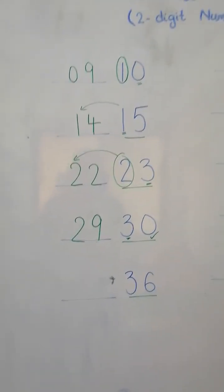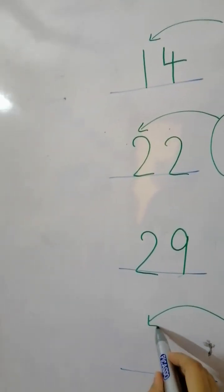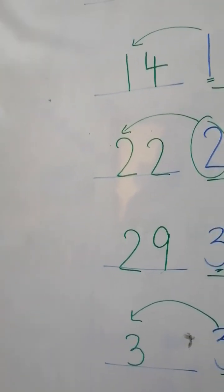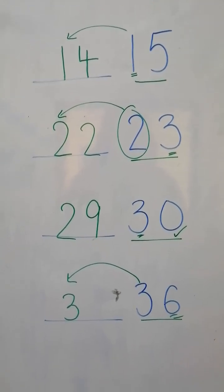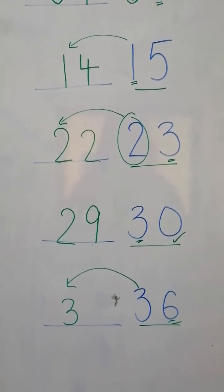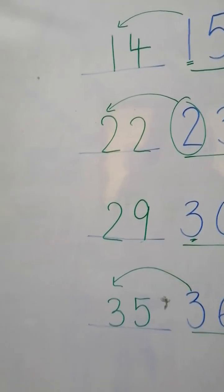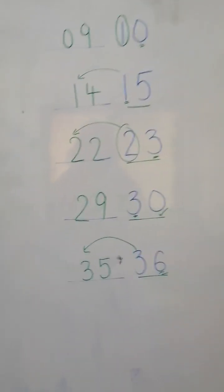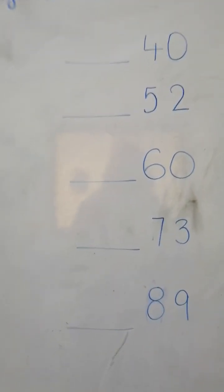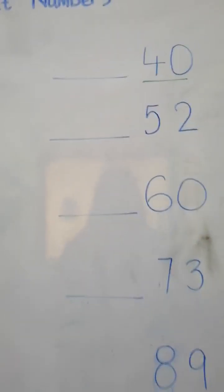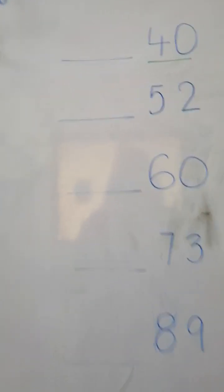Next we have 36. Do we have zero? No, we don't. Then we will write number three as it is and we will do the before number of number six — ten, nine, eight, seven, six — yes, right, we will write number five. Next, which number is it? Four zero — forty. We have zero here.